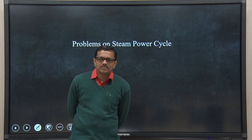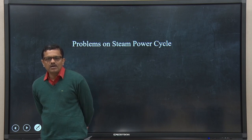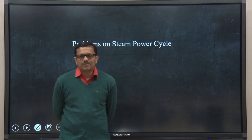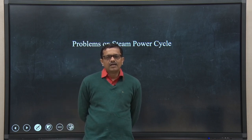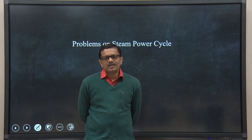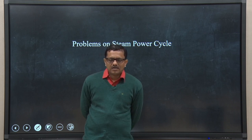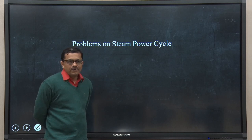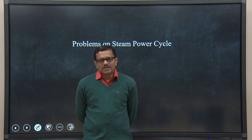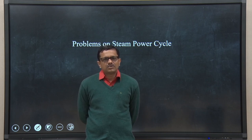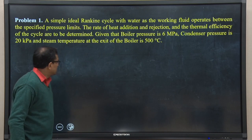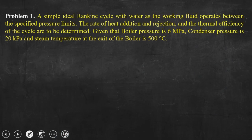Till now we have discussed thermal efficiency from a qualitative perspective — you know that Carnot efficiency is maximum, while efficiency of the ideal Rankine cycle or Rankine cycle with reheating is lower. To have a quantification of thermal efficiency in a steam power plant, we need to solve a few problems. Today we shall solve two different problems; one problem is taken from the simple ideal Rankine cycle.